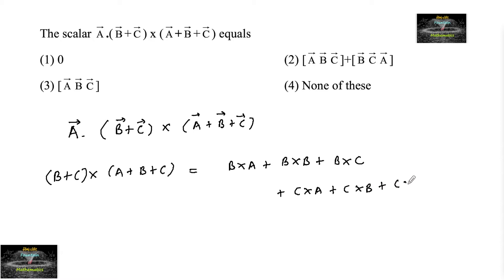Plus C cross B plus C cross C. So we can write B cross A, B cross B is 0, and B cross C we can write as minus C cross B, plus C cross A. Plus C cross B, and again C cross C is 0.